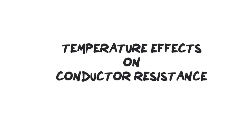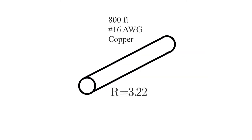In this video, we'll be looking at the effect temperature has on conductor resistance. So here we have a conductor that is 800 feet long. It's number 16, made of copper. In a previous video, we worked out that its resistance worked out to be 3.22 ohms.